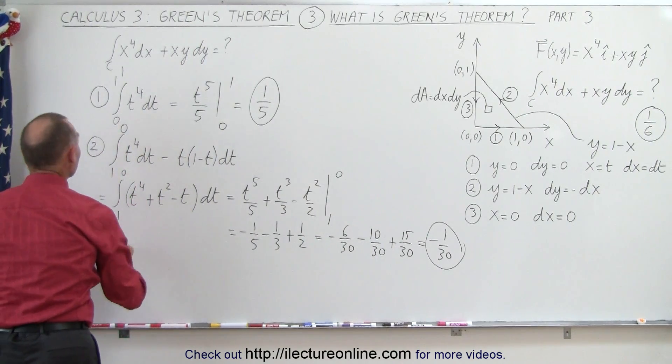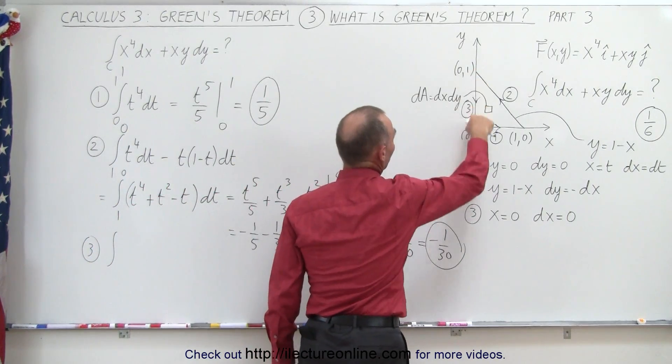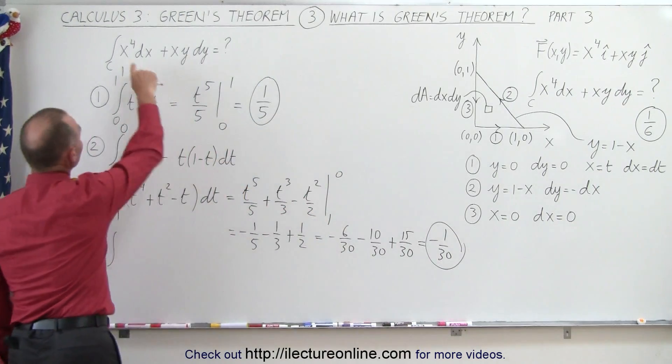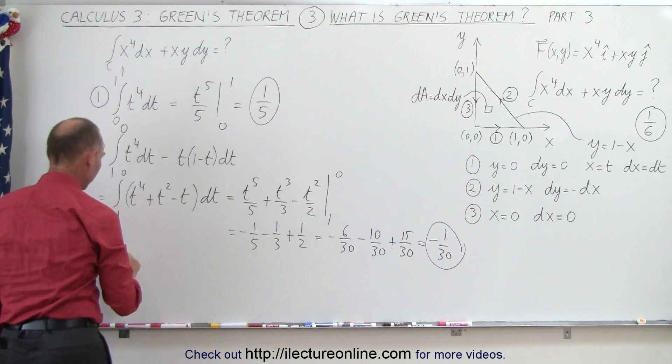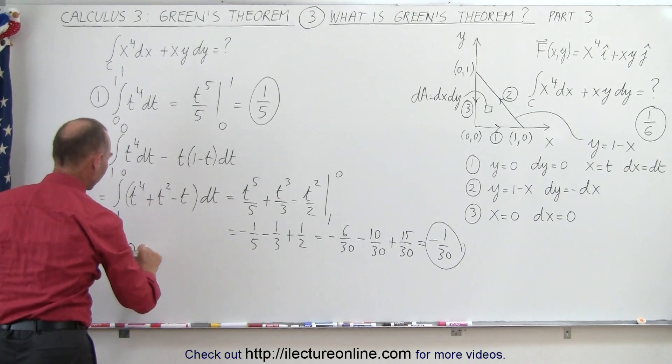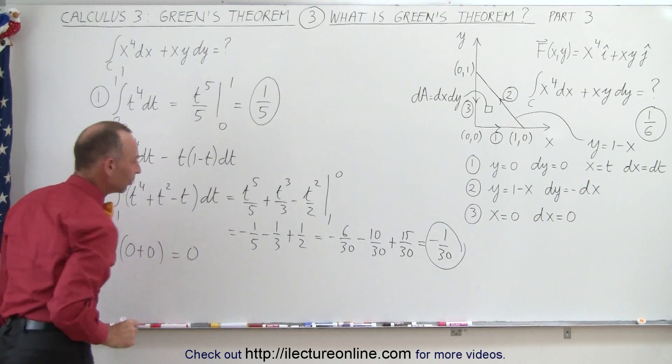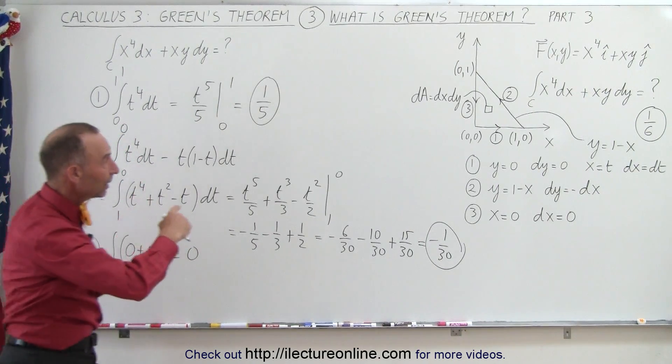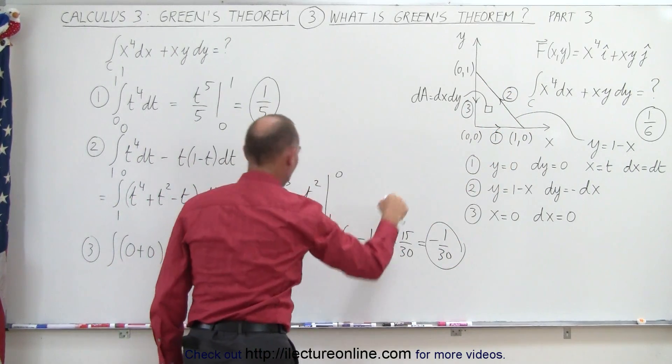The third integral would be the integral from, now we're going to do this path right here, and notice in this case, x is equal to 0, but since we have an x here, and we have an x there, both of these terms go to 0, so this would be an integral of 0 plus 0, and therefore that must be equal to 0. So what we know now is that the line integral along the complete closed path will be the sum of these two.